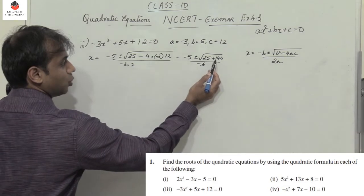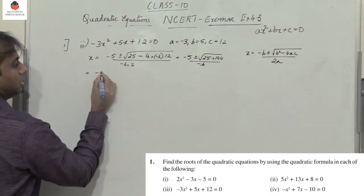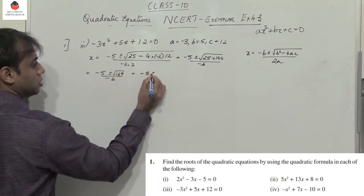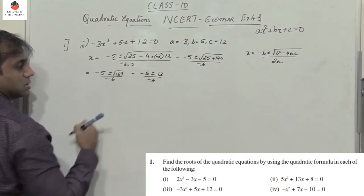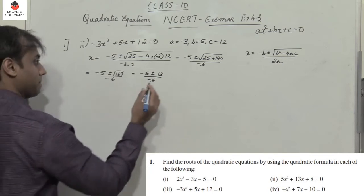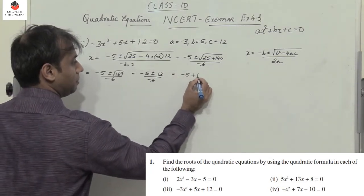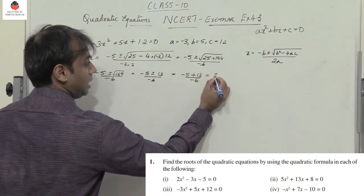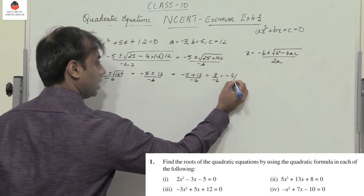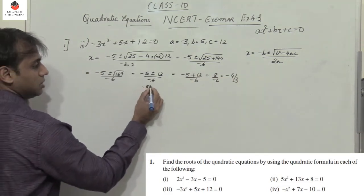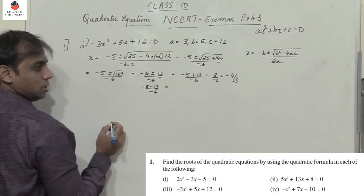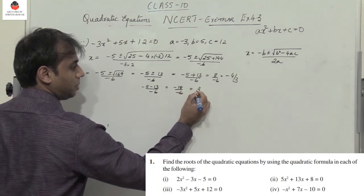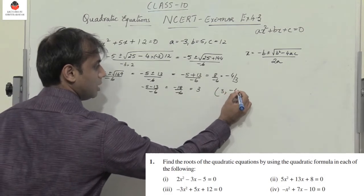We get 144 plus 25 equals 169, so minus 5 plus or minus root 169 by minus 6, which is minus 5 plus or minus 13 by minus 6. First value: minus 5 plus 13 by minus 6, giving 8 by minus 6 equals minus 4 by 3. Second value: minus 5 minus 13 by minus 6, giving minus 18 by minus 6 equals 3. The two roots are 3 and minus 4/3.